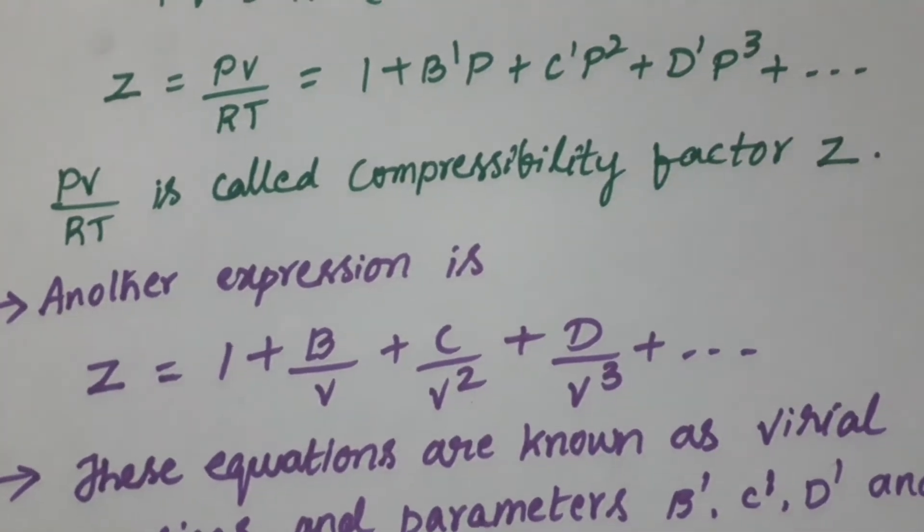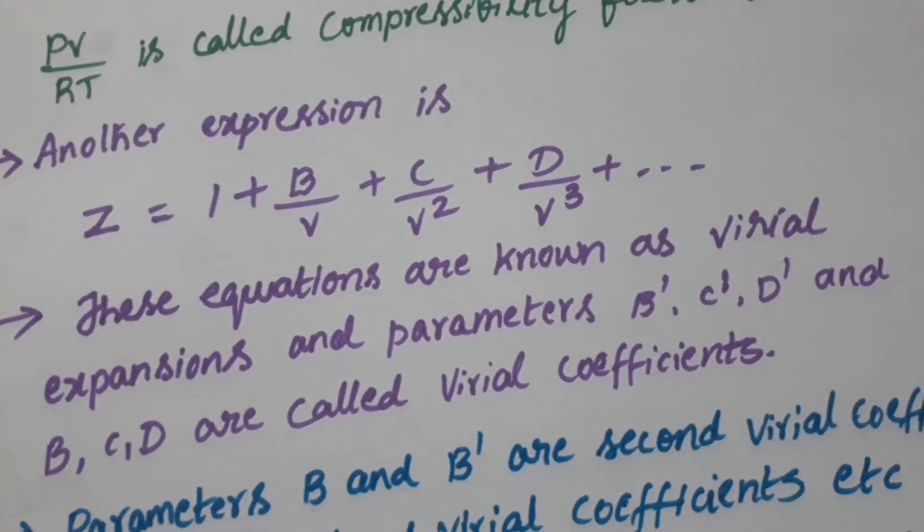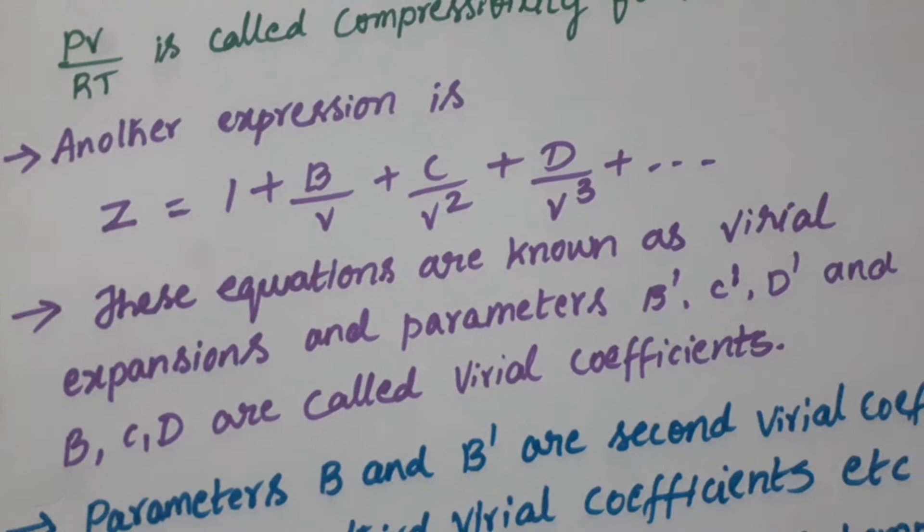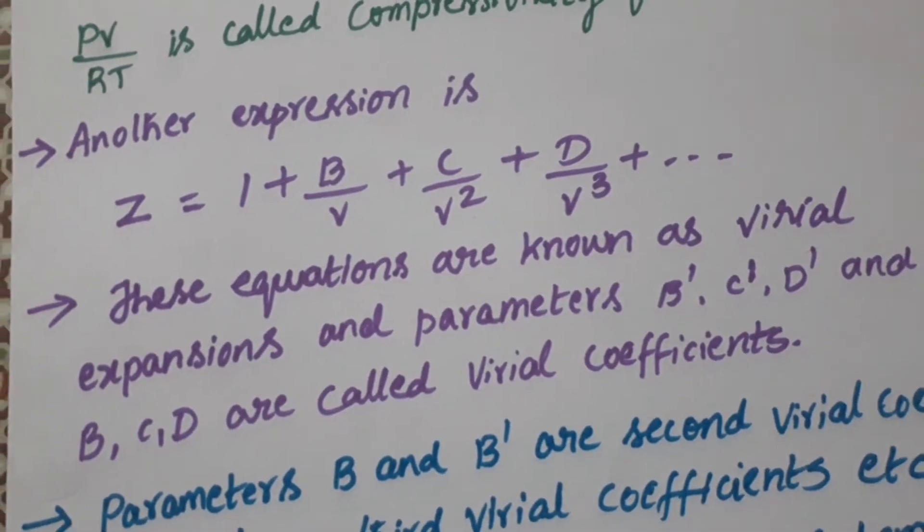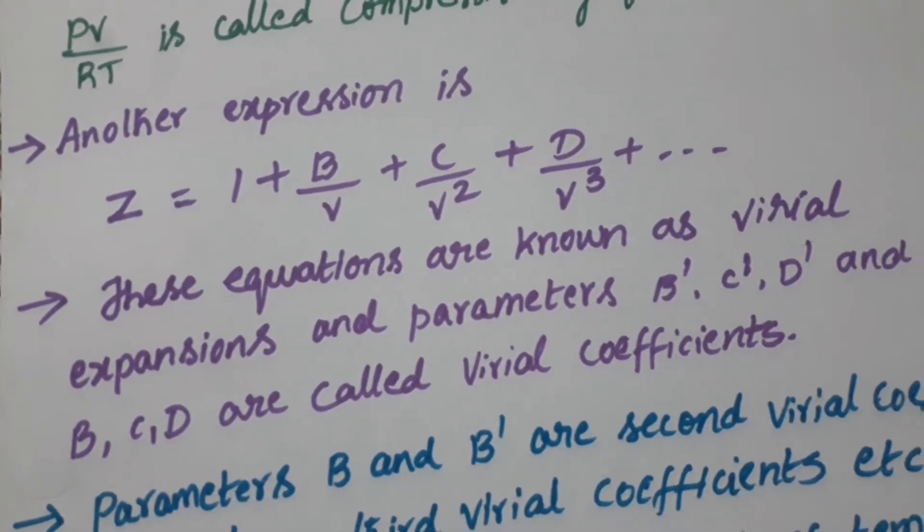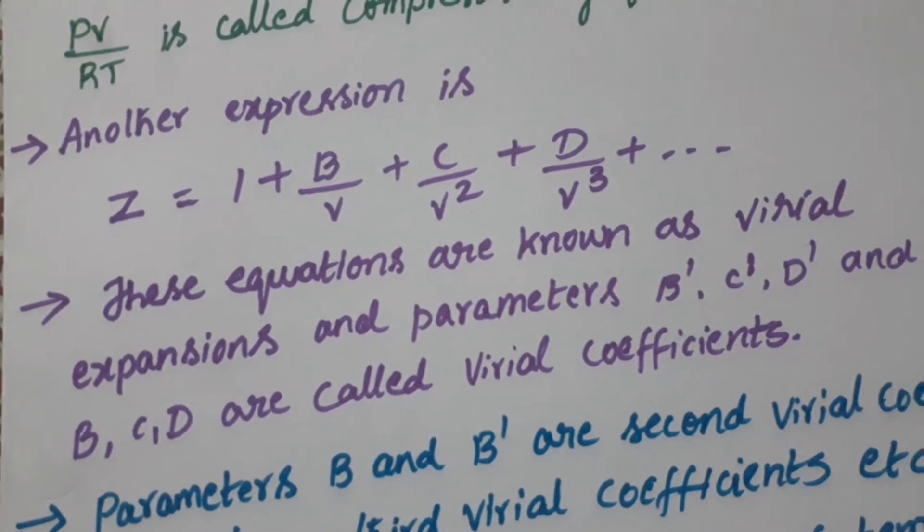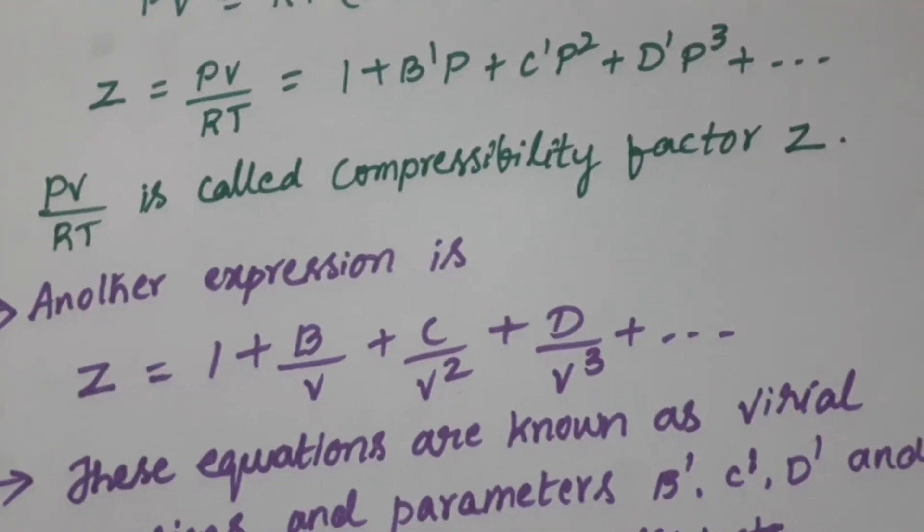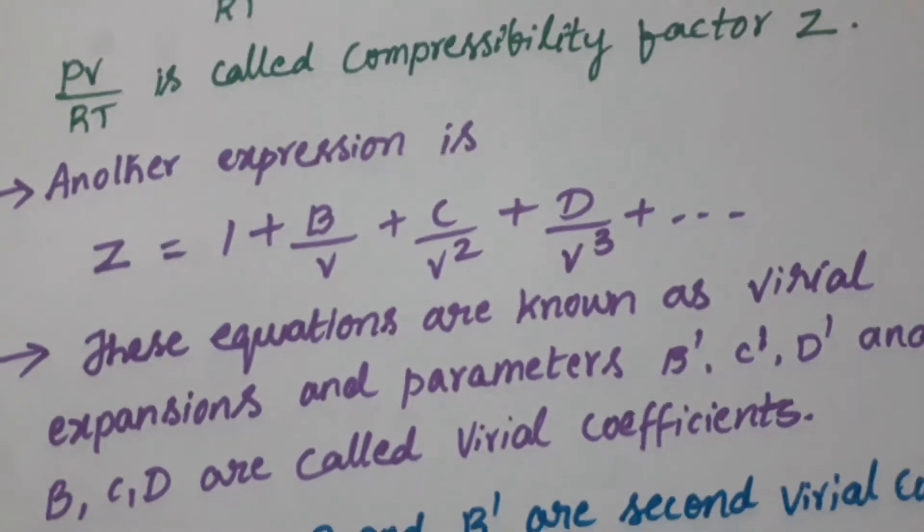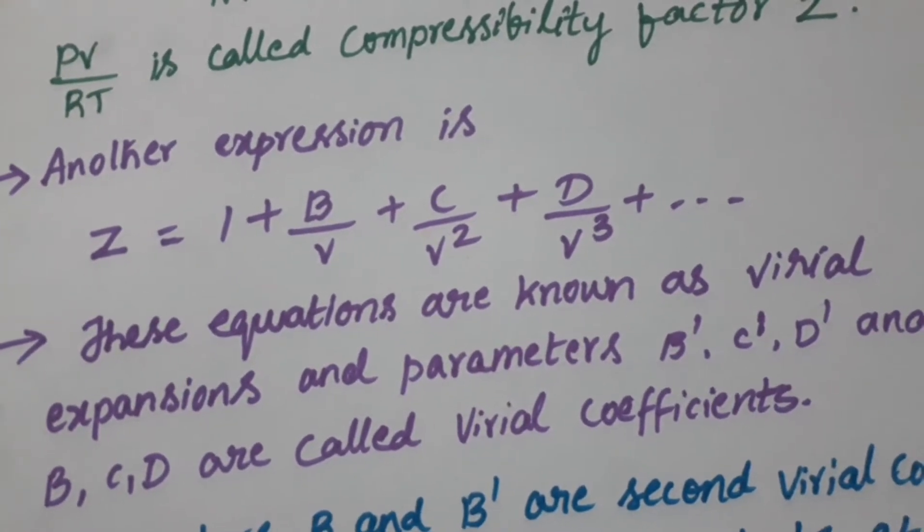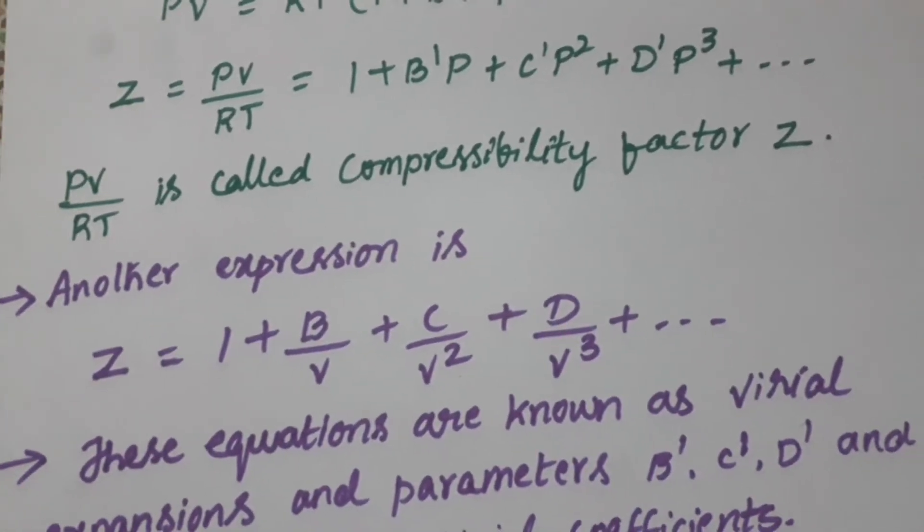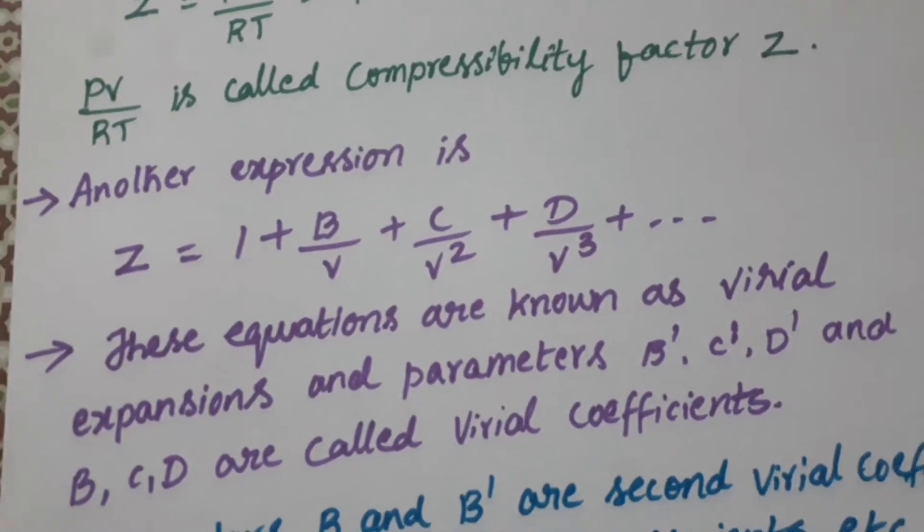So similarly, we can write another expression that is Z is equal to 1 plus B by V plus C by V² plus D by V³. So which is represented in terms of volume. This is written in terms of pressure and this expression is written in terms of volume. So these two equations, we call it as virial equations.